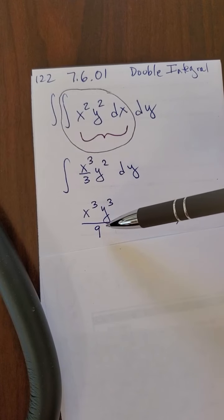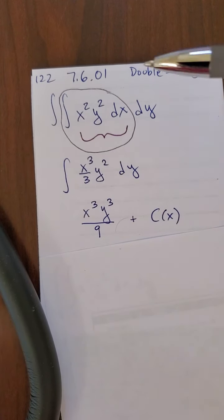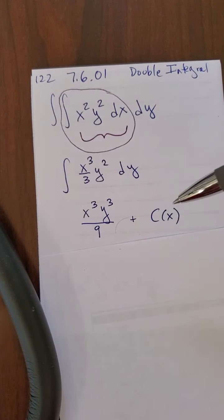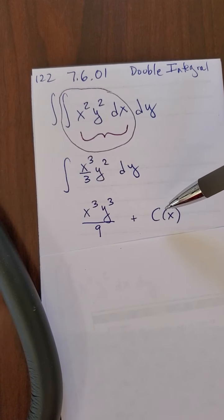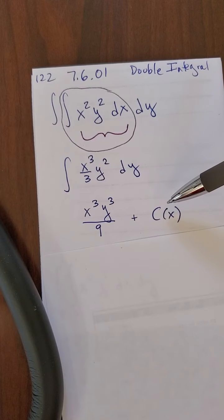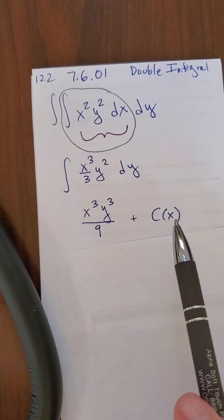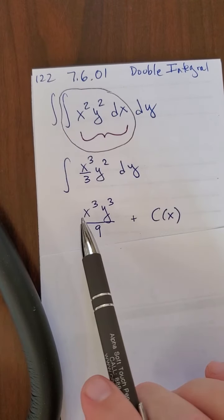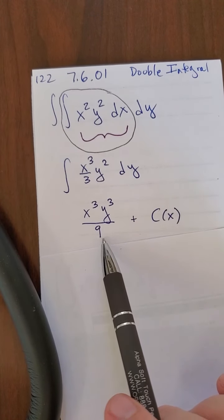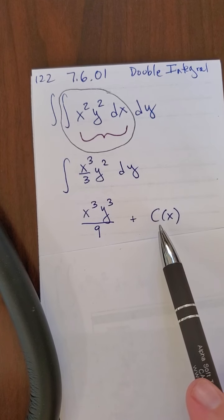Now, here's the interesting, different part. When I do a plus c, instead of just doing a plus c of a constant, I'm doing plus c of x. Because if there's any, because if I would start with any, if I had x cubed y cubed over 9, and I add any function of x, something that's a function of x,